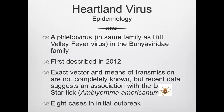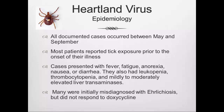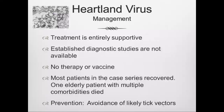Eight cases were in the initial outbreak. All documented cases occurred during warm weather months, May through September. Most patients reported tick exposure prior to illness onset. Typical symptoms included fever, fatigue, anorexia, nausea, or diarrhea; some had bone marrow sequelae or elevated liver enzymes. Many were initially misdiagnosed with Ehrlichia due to geographic distribution but did not respond to doxycycline. Treatment is entirely supportive; no therapy or vaccine exists. Most patients in the case series recovered; one elderly patient with multiple comorbidities died.